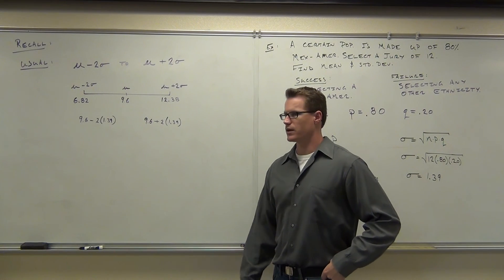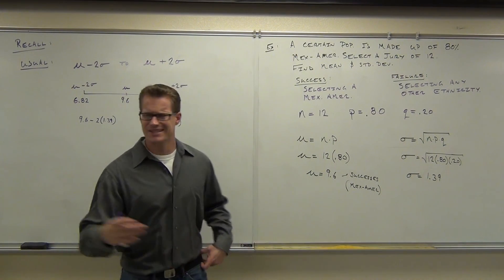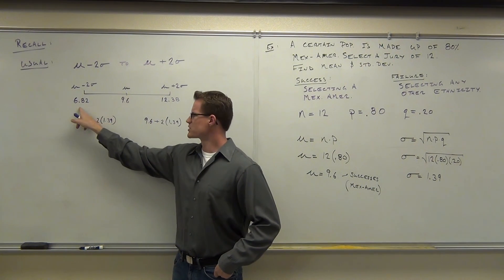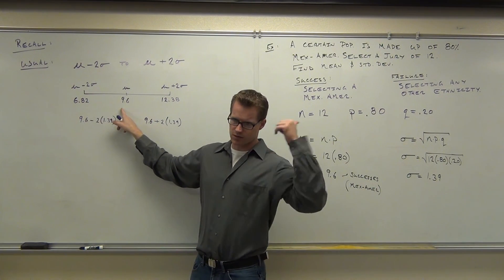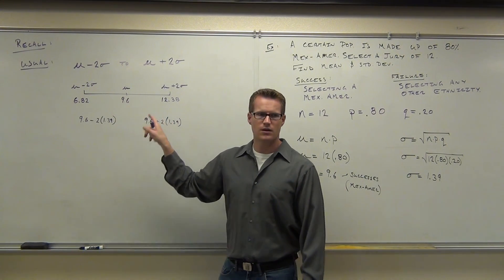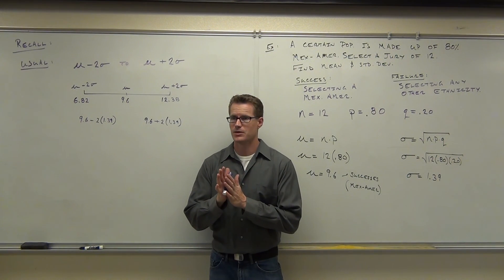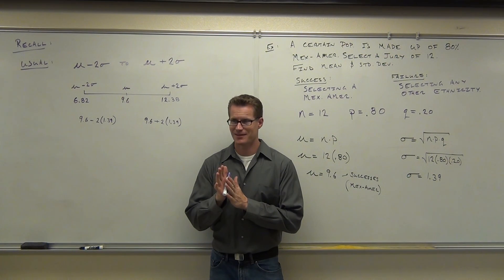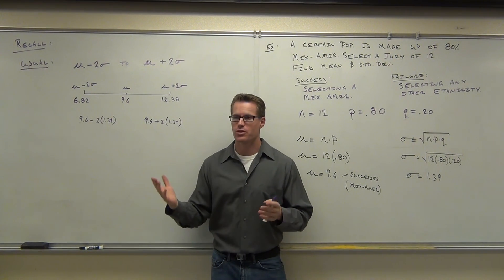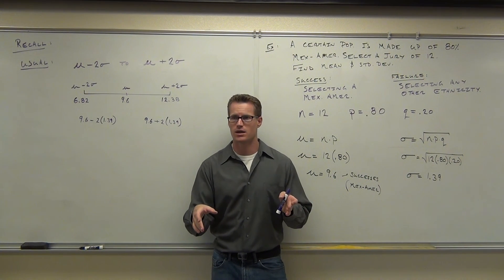That's usual, right? That's our range that says if you fall in there, you're okay. If you're outside of that, you're not okay. What are these numbers again? This is numbers of what? In our context. Those are numbers of successes. What's our success in this situation? Mexican-Americans. 6.82 to 12.38 Mexican-Americans would be our normal range for our situation for our juries. That would be normal.